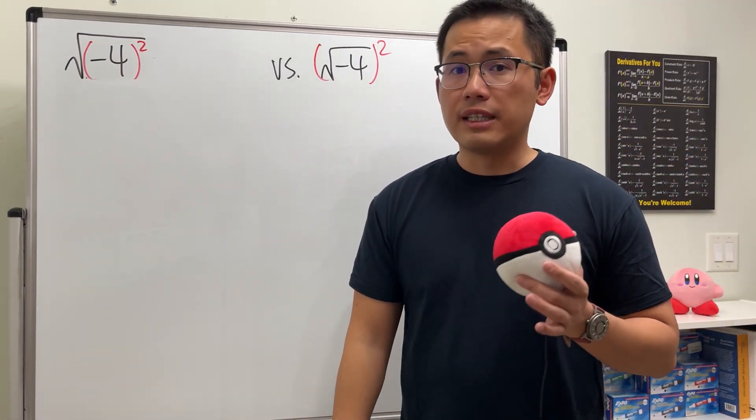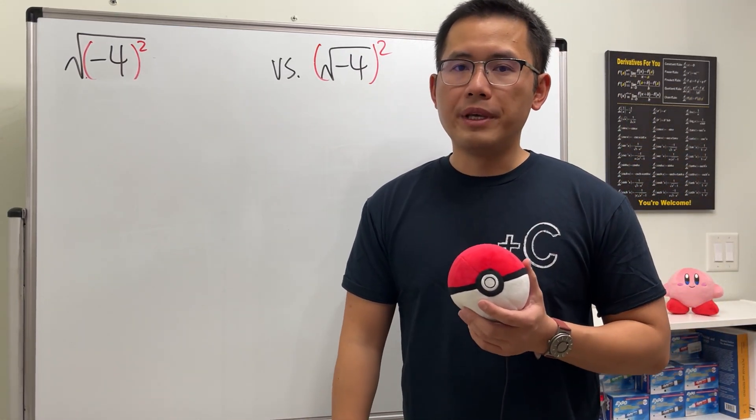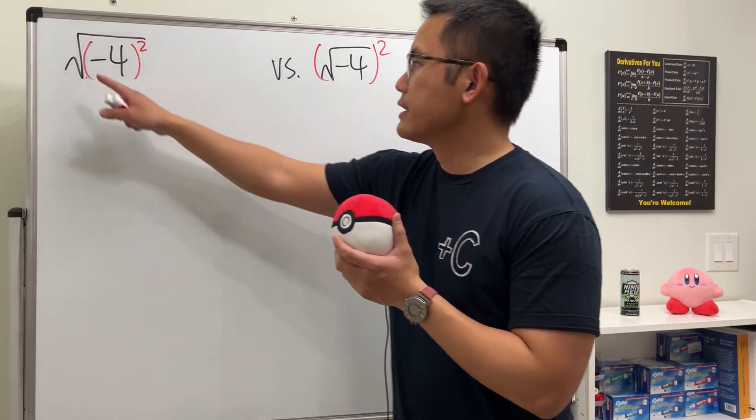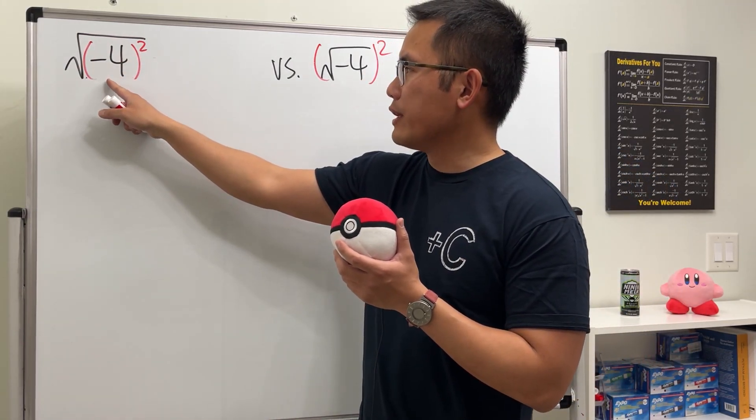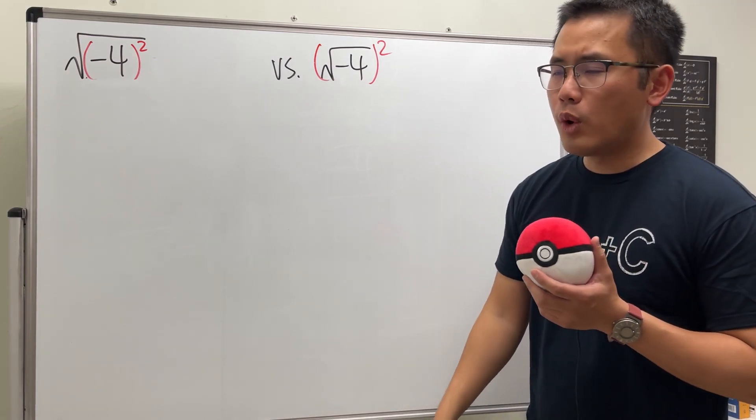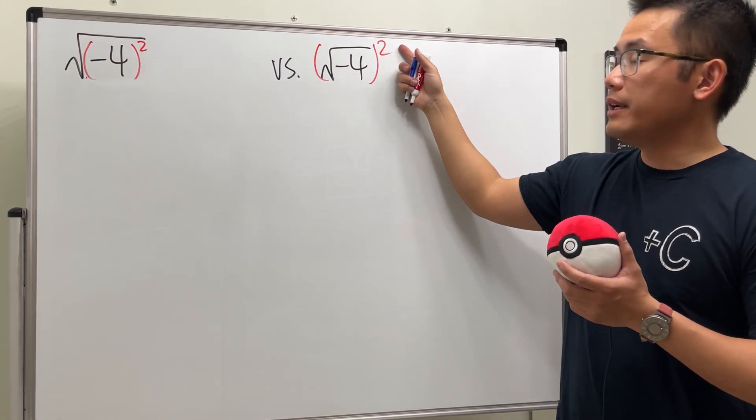These two types of questions often cause a lot of confusion, so I would like to make it clear for you. The first one is square root of parentheses with negative 4 inside and then square. And for the second one, we can see that the parentheses square is on the outside.